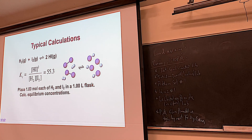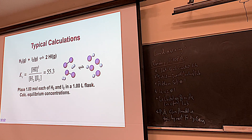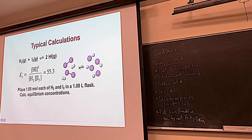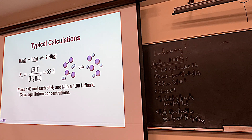Equilibrium: products divided by reactants. If there's a stoichiometry other than 1, you raise it to that power. Don't include solids and liquids. The value of K tells you if it's more product-favored or reactant-favored. If K is greater than 1, there's more product — more HI for this reaction at equilibrium than H2 and I2.